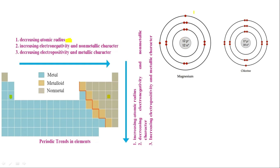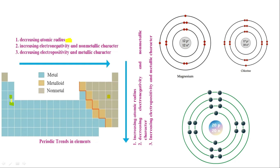In magnesium, the effective nuclear force on electrons is less compared to chlorine. So magnesium will more easily lose its electrons. Now, if we take one group — say we take calcium below magnesium in the same group — let's check three trends going down a group. First: atomic radius will increase. Yes, that will happen because the row number changes as we go down.